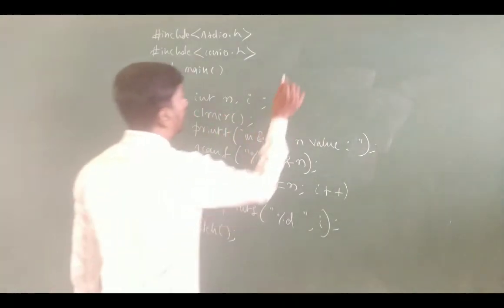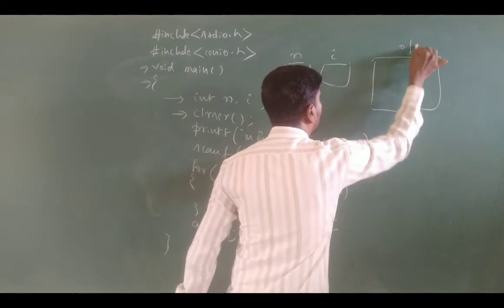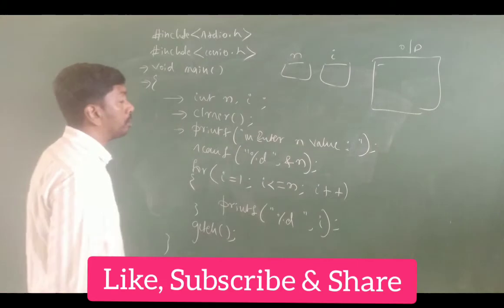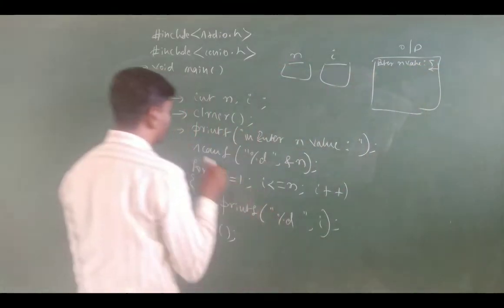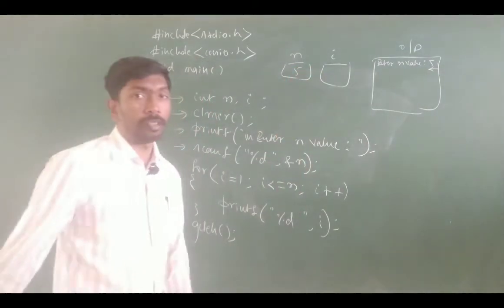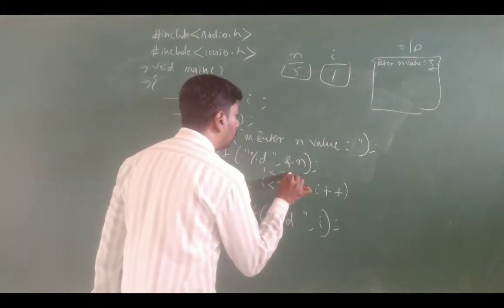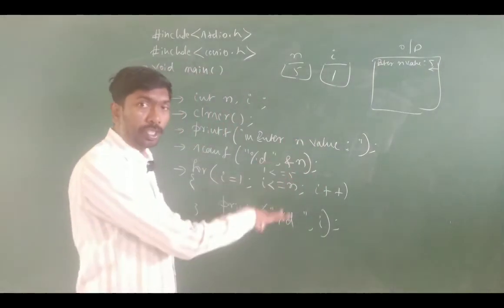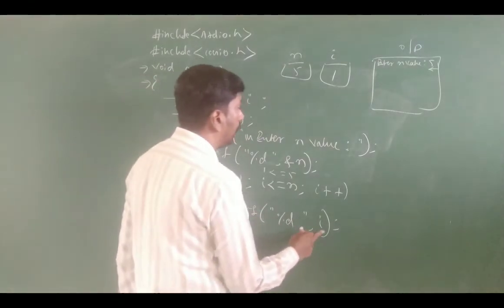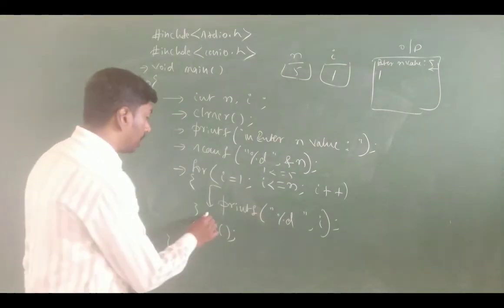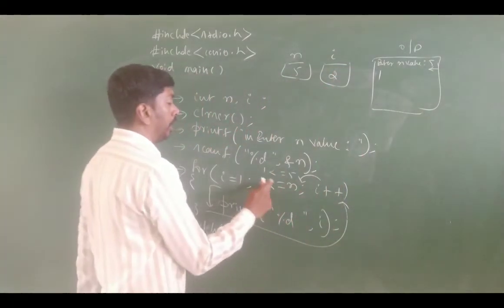Tracing the program: void main executes, entering the block. int n and i are declared — n is one memory block and i is one memory block. Next clrscr clears the output screen. printf prints 'enter n value'. scanf reads and stores n. For loop: i is initialized to 1. 1 is less than or equal to 5 — condition true. It enters the block and printf prints i value 1. Then it moves to i++.